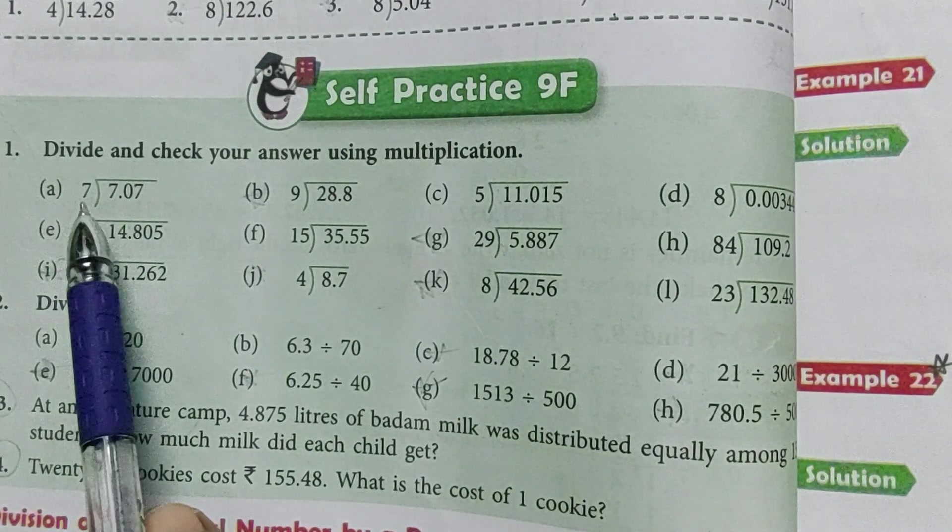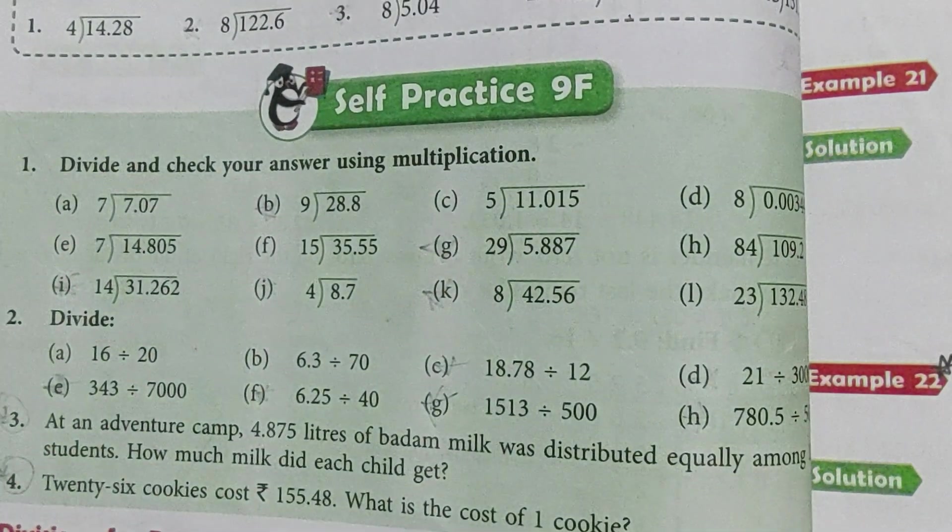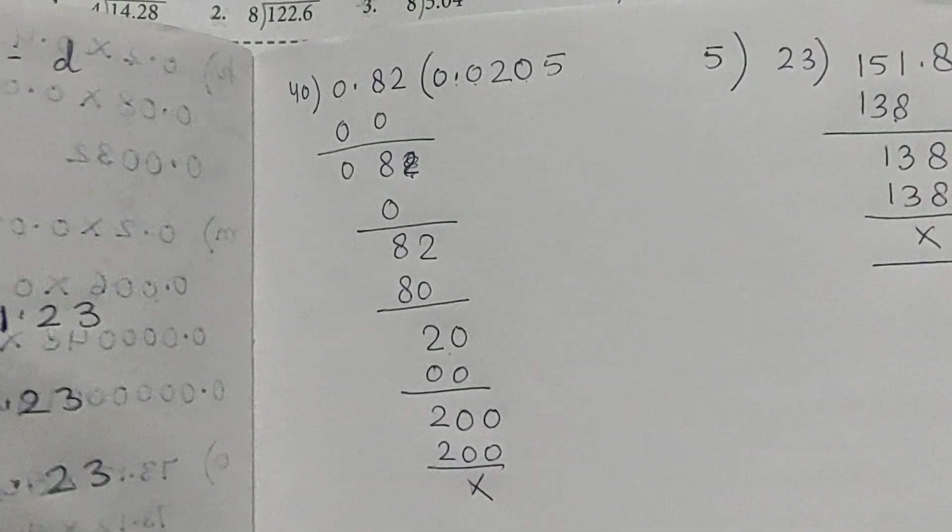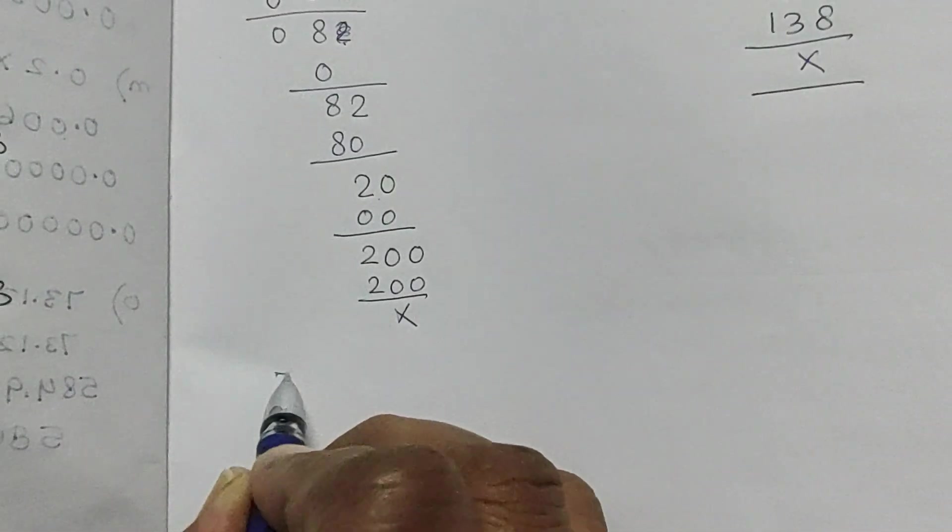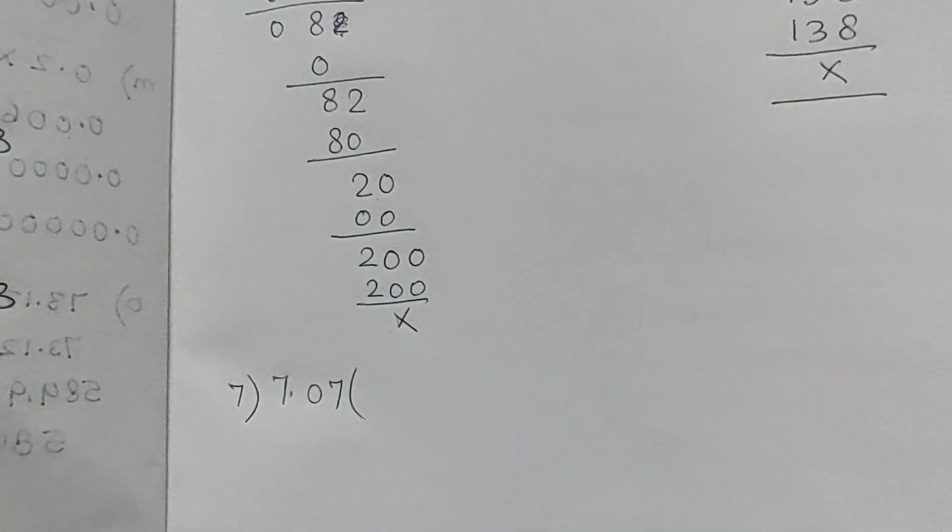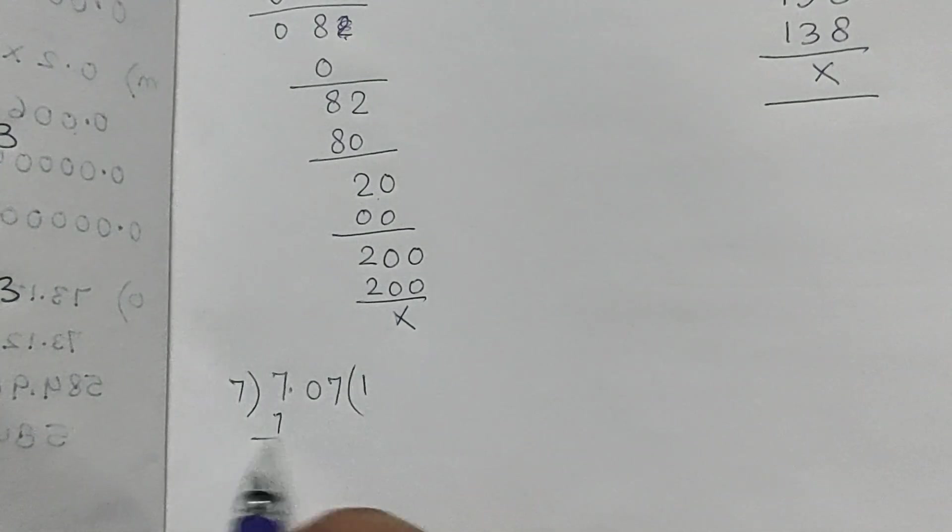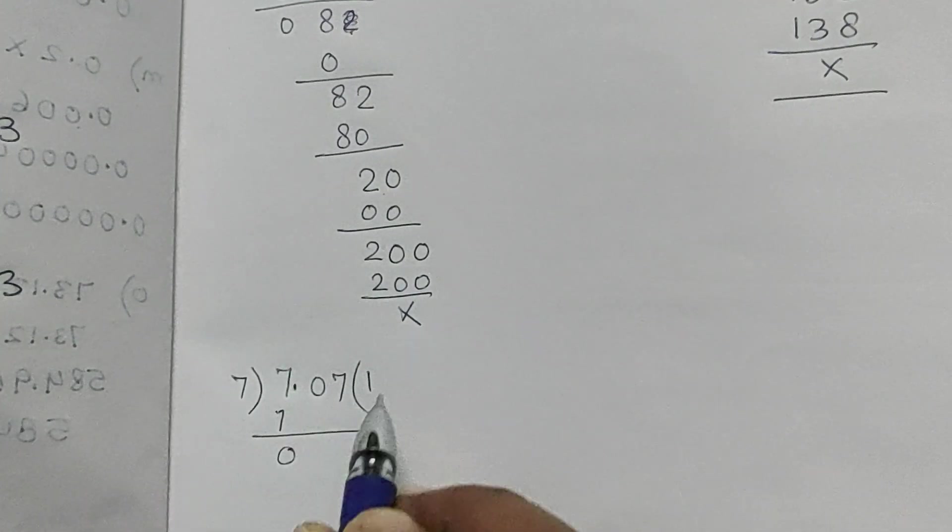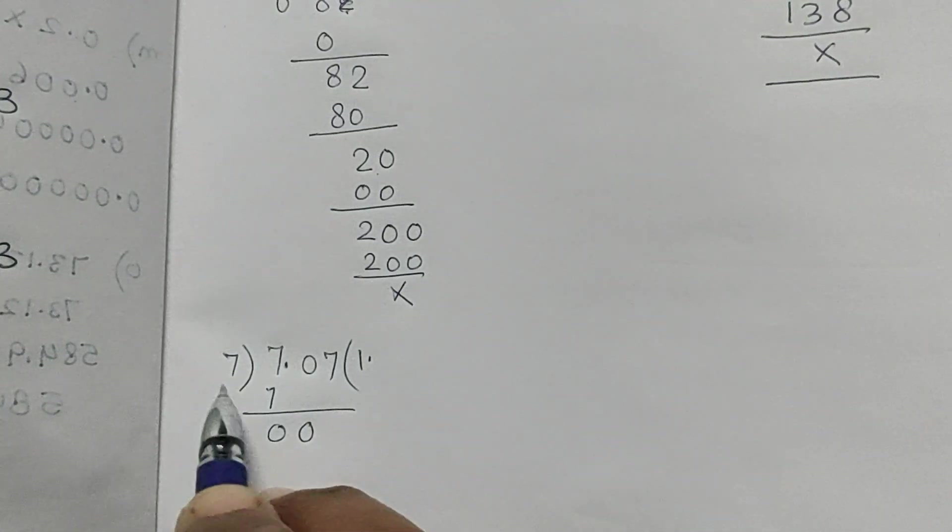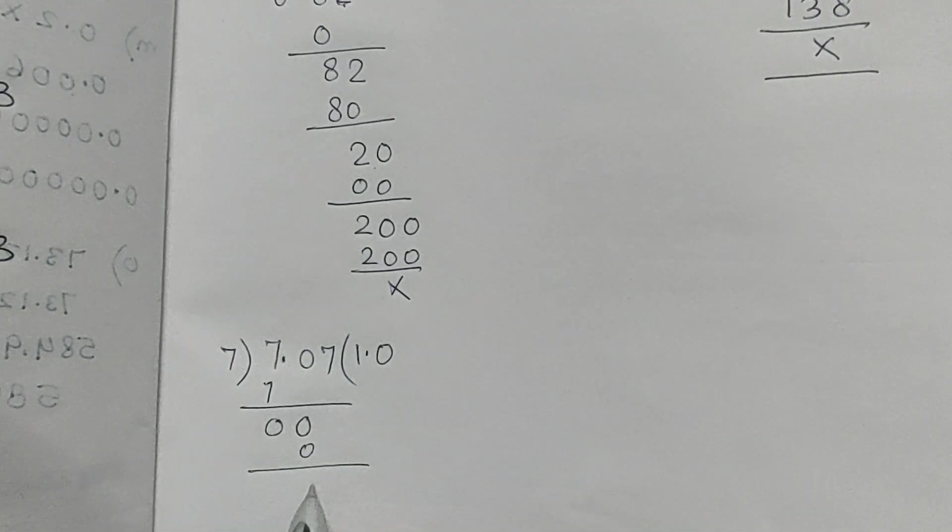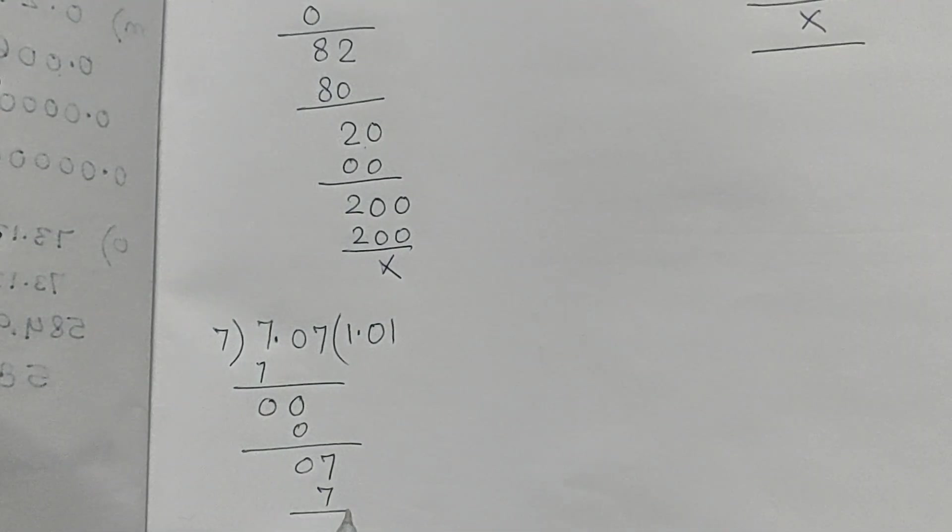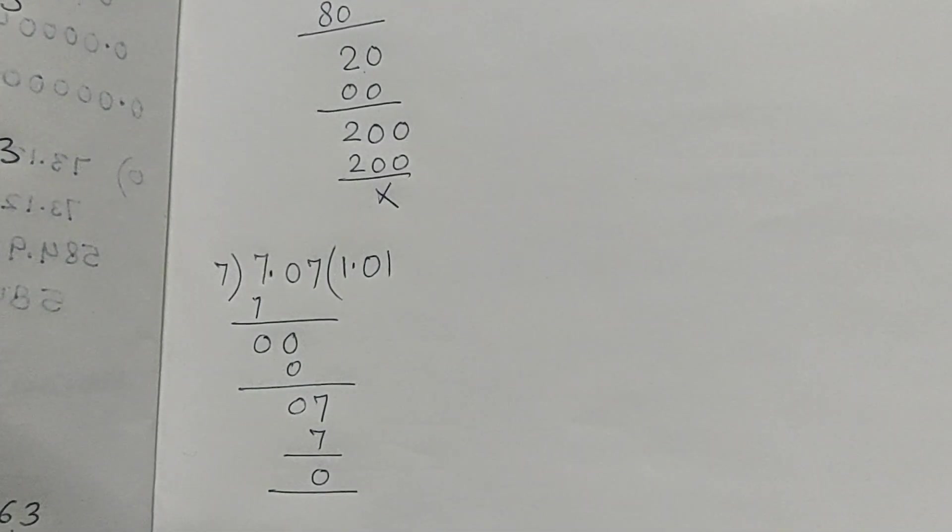So let's start. 7.07 divided by 7. Seven into one is seven, zero. Then we have the point here, we have the point here. We will add zero to the zero, zero, seven into one is seven, and this division is complete.